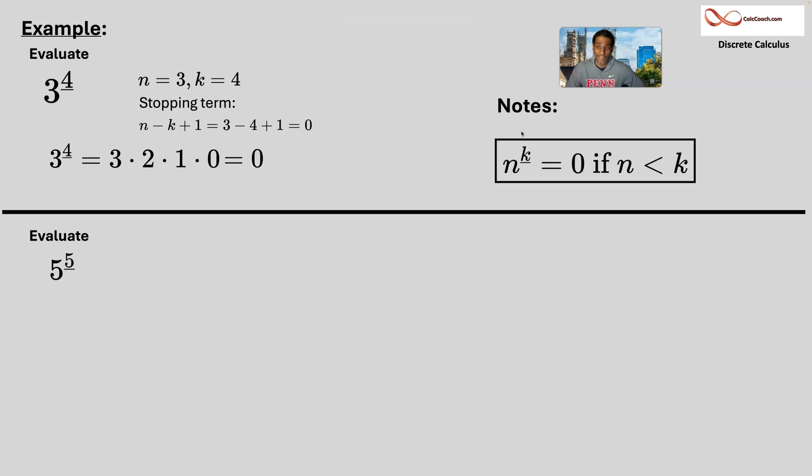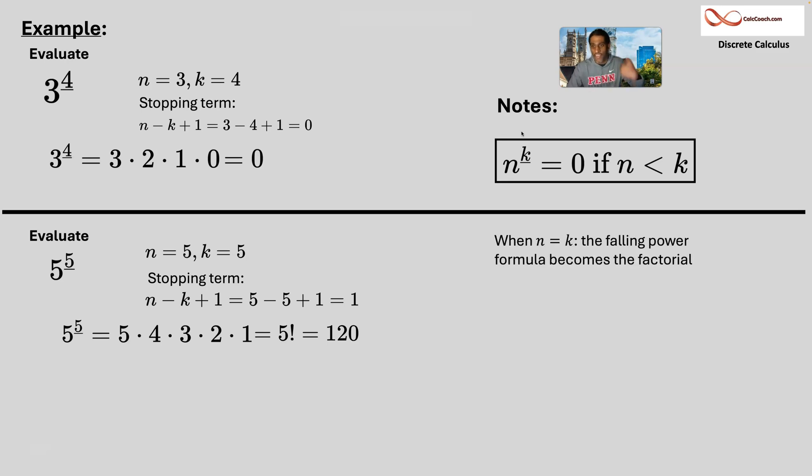What if they match? 5 falling 5, where n is 5 and so is k. Your stopping term is n minus 5 plus 1. 5 minus 5 plus 1, you're going to stop at 1. So start at 5 and stop at 1. That looks familiar. 5, 4, 3, 2, 1. That's a factorial. So if n and k are equal to each other, then the falling power just becomes the factorial. n falling n is just n factorial. By definition, n falling 0 is 1, defined to be equal to 1.